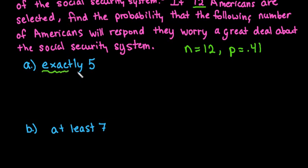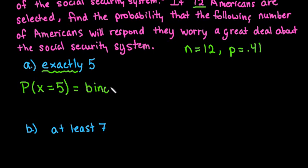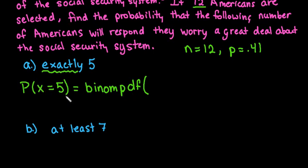Let's start with exactly. Exactly means we are looking for the probability that x equals 5. When doing this in our calculator, we use binomPDF. PDF stands for probability distribution function — or probability density function, depending on your textbook — and this gives you exactly one specific value using the binomial formula.